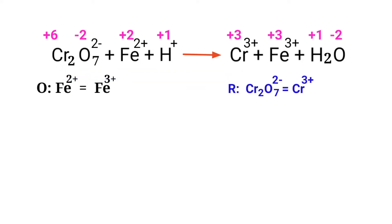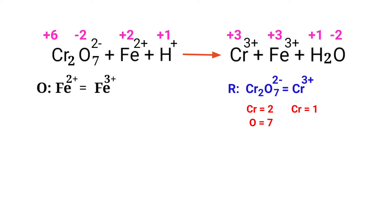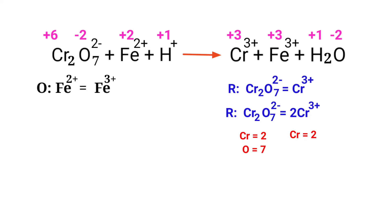Now balance the number of atoms in the two half reactions. In the oxidation half reaction, the atoms are already balanced. In the reduction half reaction, to balance the chromium atoms, place a coefficient of 2 in front of Cr3+. The chromium atoms are now balanced.